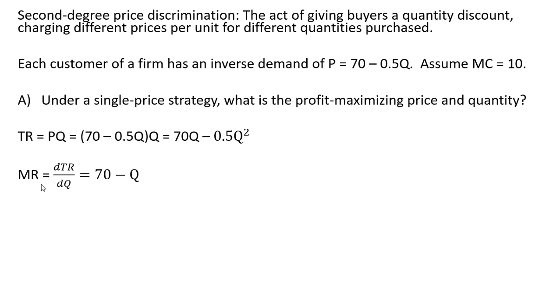Next is getting marginal revenue. Taking the derivative of total revenue with respect to quantity, 70Q becomes 70. And 0.5Q squared, bring down the two in front, we're just going to get minus Q.